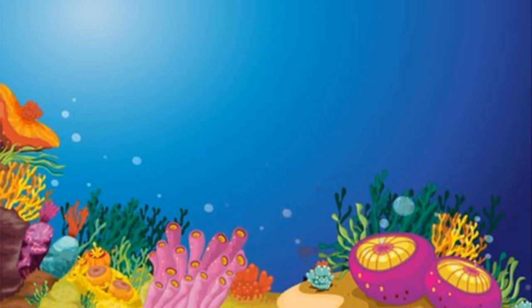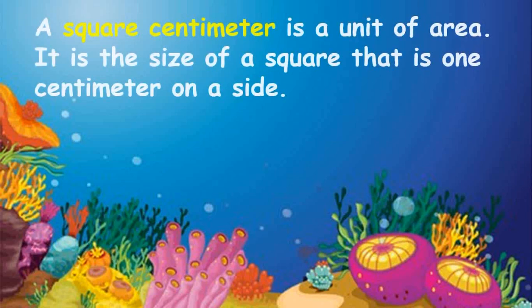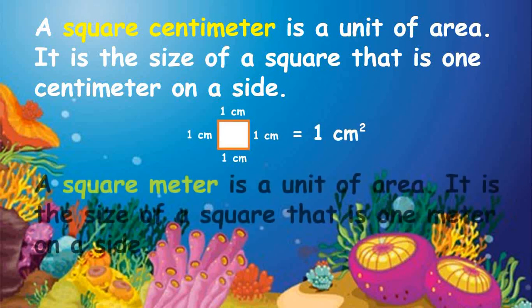Let's first have a little knowledge of what a square centimeter is. A square centimeter is a unit of area — it is the size of a square that is one centimeter on a side. How about a square meter? A square meter is a unit of area — it is the size of a square that is one meter on a side.